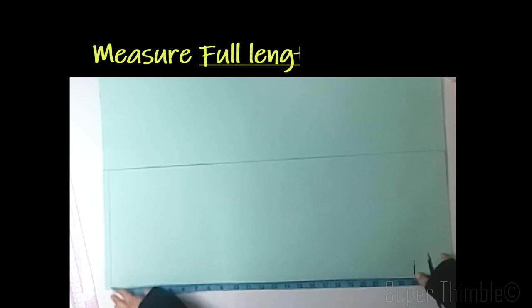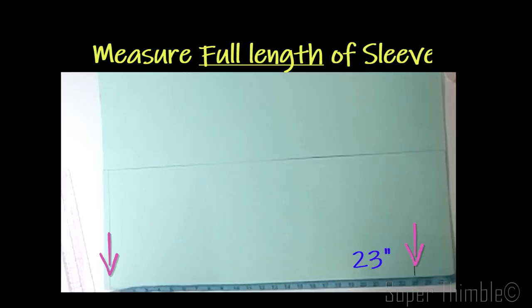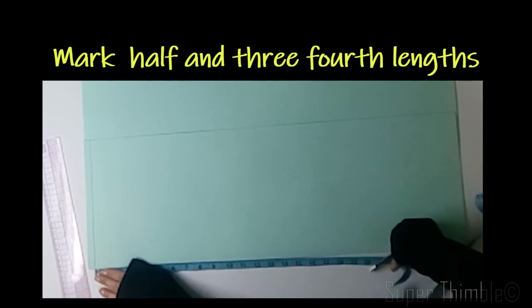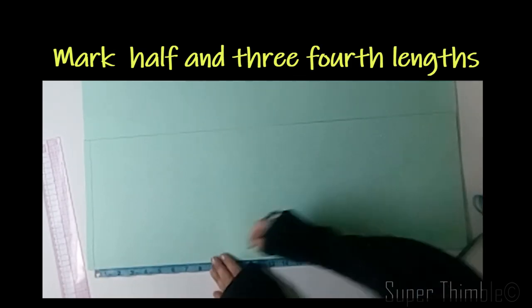Mark the full length of sleeve. Let's assume it's 23 inch. Simultaneously, mark the length of three-fourth sleeve and half sleeves.